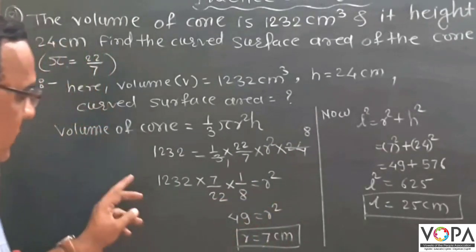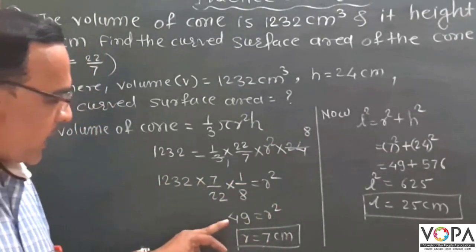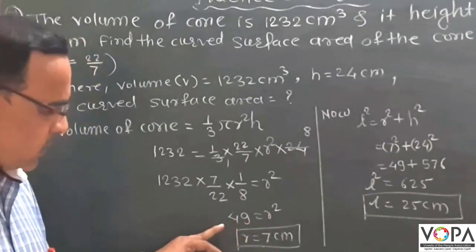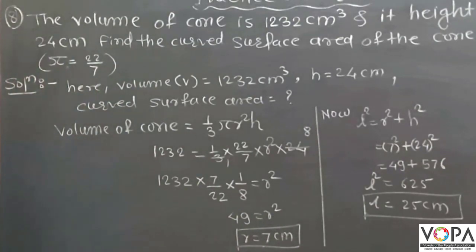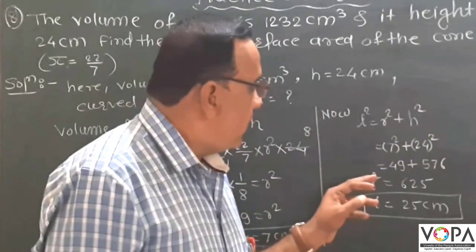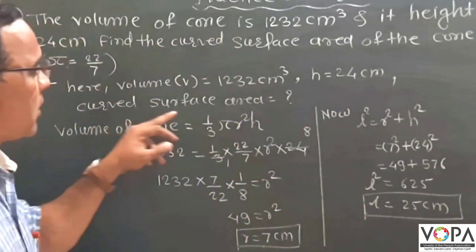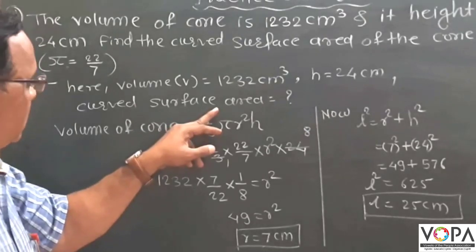By solving this step, we get 49. That is, r² is equal to 49. Therefore r is equal to 7 cm.